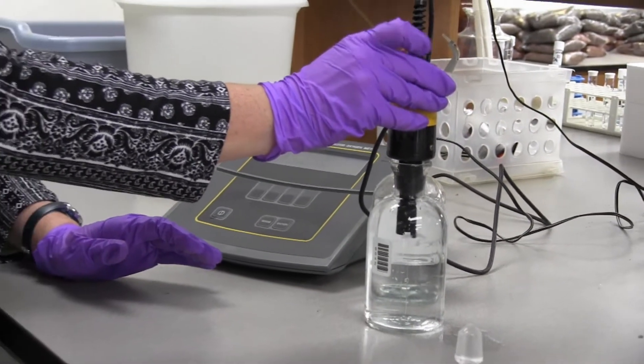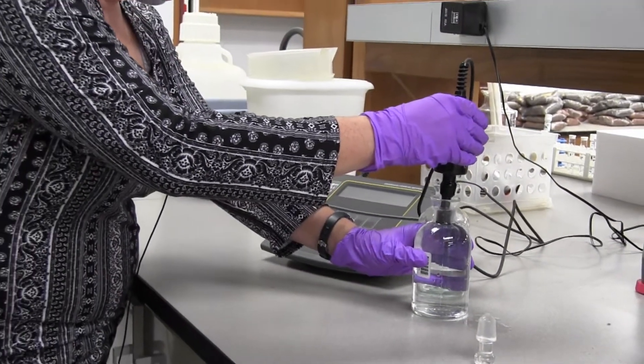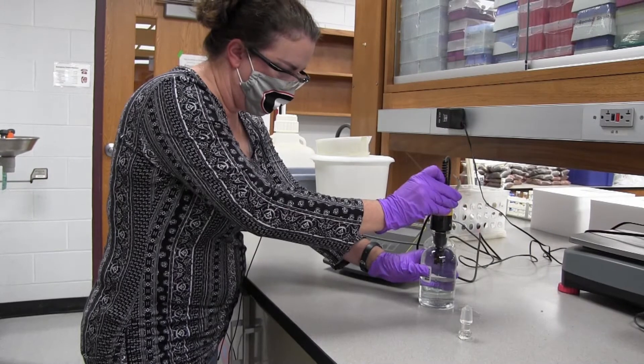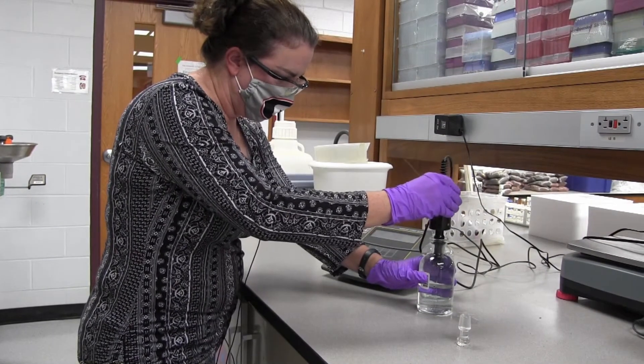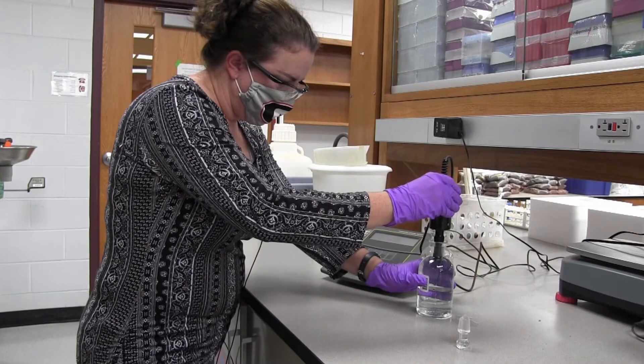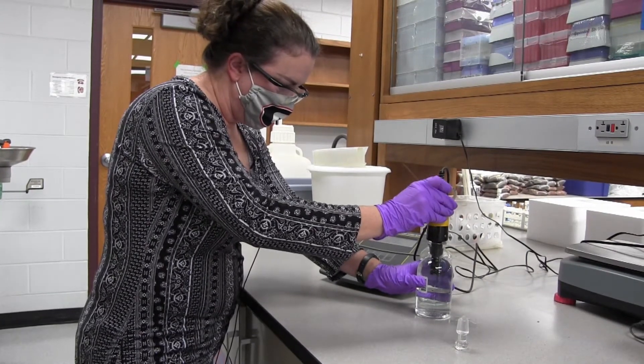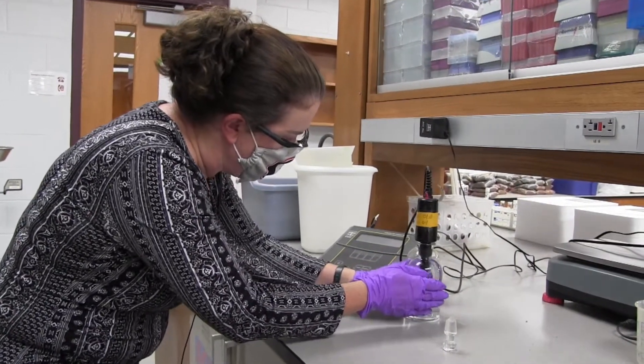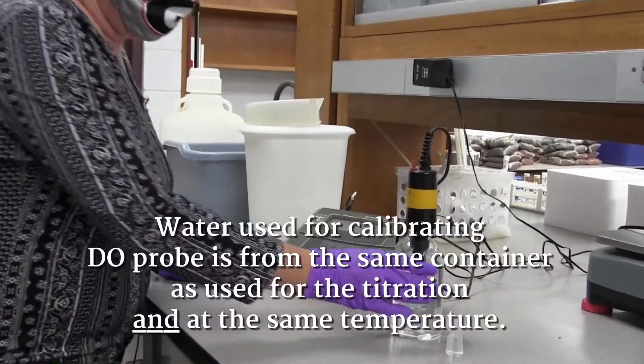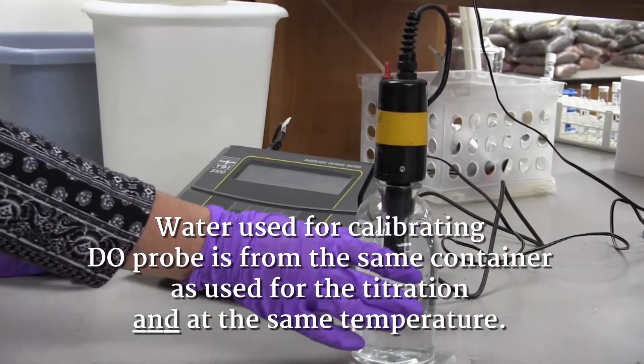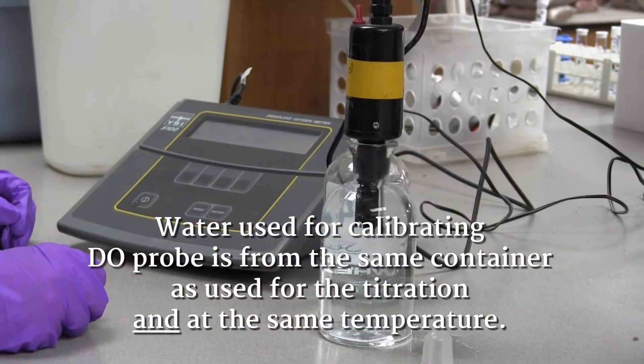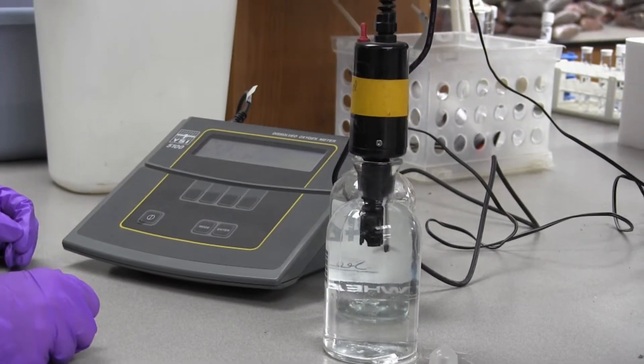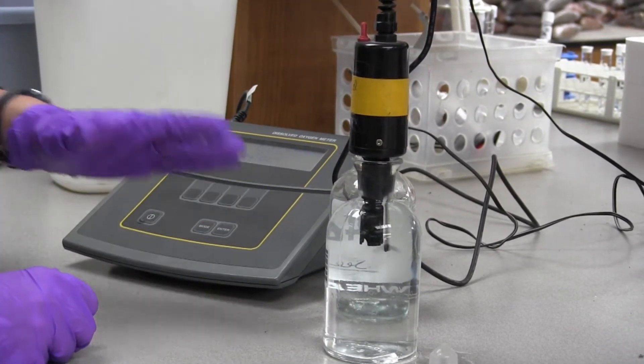I'm going to turn this on. If you have any air bubbles in the sample, just lift, turn the DO probe off, lift it up. You want to try to avoid air bubbles in here when you put the probe in the water sample. This is the extra bottle that we poured up in the Winkler when we started out with the Winkler titration. I've got this running, the probe is on. You want to let that stabilize just a moment.